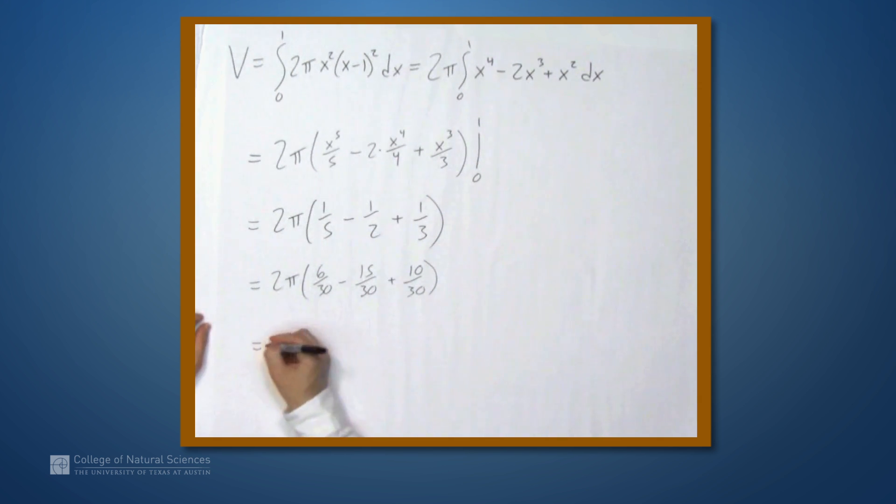6 minus 15 plus 10 is positive 1, so this is 2π times 1 over 30, or π over 15. So, this is the volume of the figure obtained by rotating that region around the y-axis, and we found it using cylindrical shells.